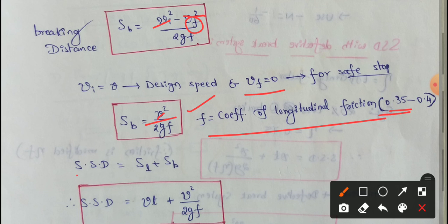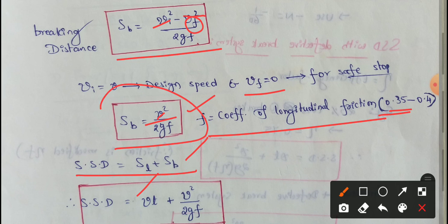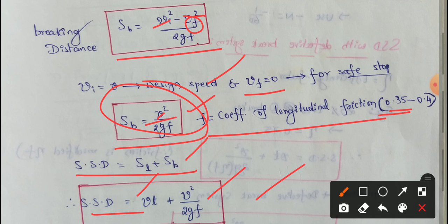So, SSD = lag distance + braking distance = V×T + V²/(2gf). This is the stopping sight distance formula, and these formulas are very important.